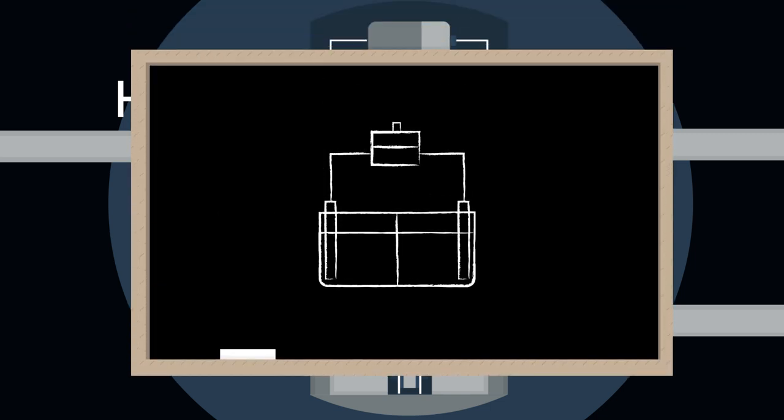In an ordinary electric cell, a metal, say zinc, ionizes at one electrode, the anode, giving off two electrons.